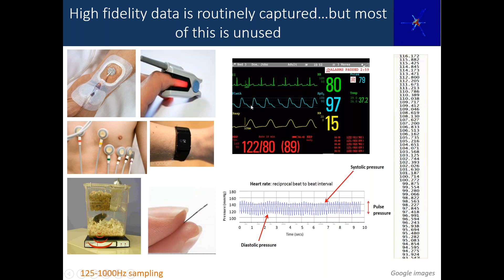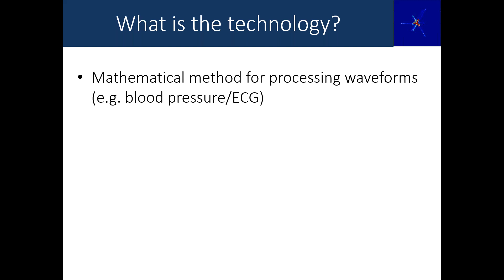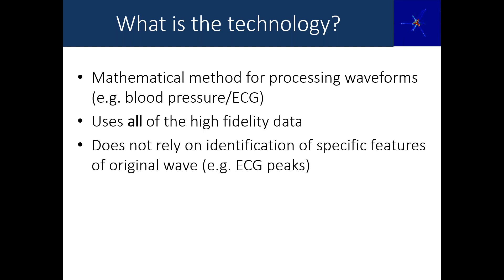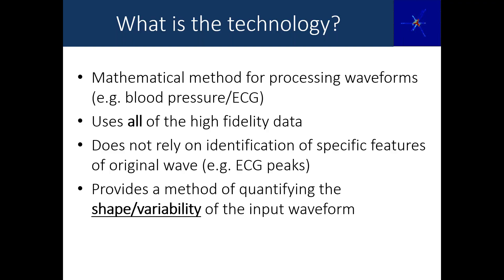Scientists and doctors say they can see changes in these waveforms, but at the moment they're described qualitatively and we need a robust method to quantify those changes. This technology is a mathematical method that can process waveforms such as blood pressure and ECG. The important point is that it uses all of the numerical values — every single data point — and it doesn't rely on the identification of specific features nor make any assumptions about the wave. For example, when we analyze ECG it's not looking for a QRS peak. Importantly it doesn't just generate an image but also provides a method of quantifying the shape and variability of the input waveform.